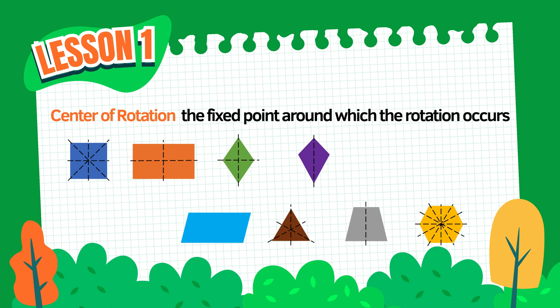It's the fixed point around which the rotation occurs, and it does not move even though the rest of the shape does. Now here's something important: in many shapes, like squares, rectangles, and rhombuses, the center of rotation is found at the point where the diagonals intersect.